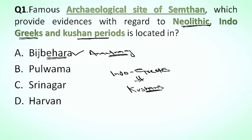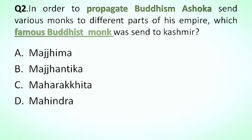Our next question is: in order to propagate Buddhism, Ashoka sent various monks to different parts of his empire. Which famous Buddhist monk was sent to Kashmir? Options: A. Majima, B. Majjhantika, C. Maharakshita, D. Mahindra. The correct answer is option B, Majjhantika. This monk was sent to Kashmir for the propagation of Buddhism by the famous Mauryan ruler Ashoka.